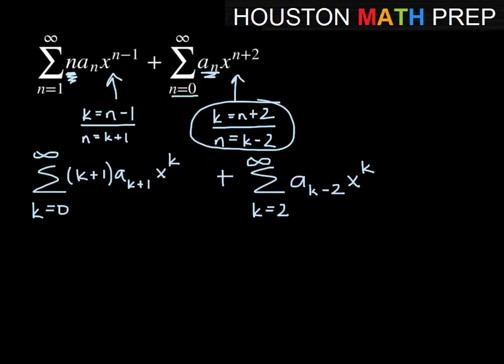Now the indices don't match: one starts at k equals 0, one starts at k equals 2. When this happens and we've made the powers agree, what we want to do is move any index forward that is behind the other. The index that is farthest forward is k equals 2, so we want to move everything up to the point where k equals 2, then they'll all match. We need to figure out what k equals 0 and k equals 1 give us from the first series before we get to that point.